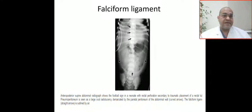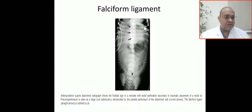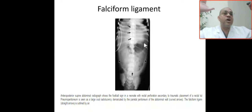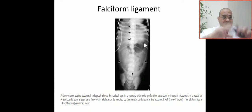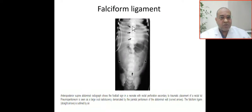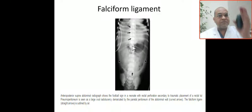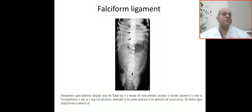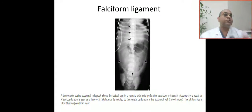On this X-ray, you can see hyperlucent areas — a radiolucent shadow that takes up the entire peritoneal cavity, here in the center of the abdomen. This large hyperlucent shadow fills the peritoneal cavity. You can see the falciform ligament — a straight whitish line in the middle of the abdomen. If you can see the falciform ligament, this indicates air in the peritoneum — intestinal perforation.